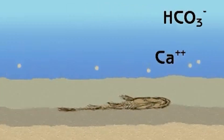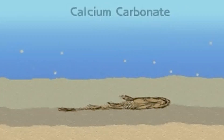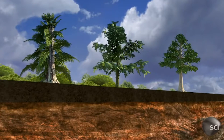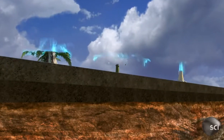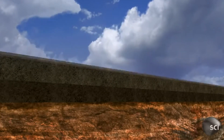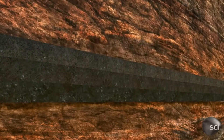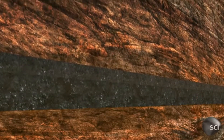Chemical sedimentary rocks are formed from dissolved minerals that precipitate out of the water. And finally, you have organic sedimentary rocks, like coal, which is made from the remains of plants or animals.